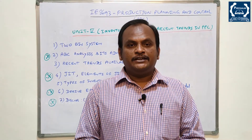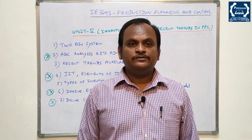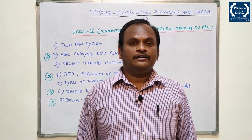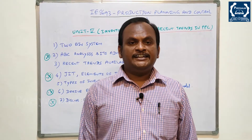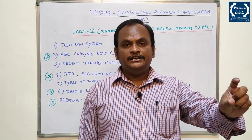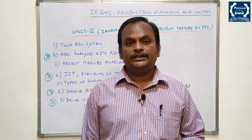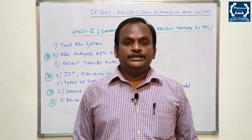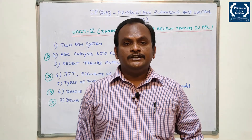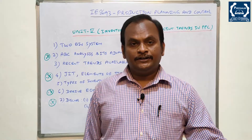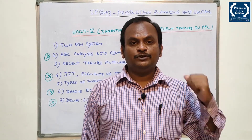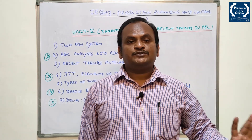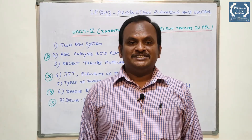PPC - production planning and control - 5 units of questions. This is a compulsory and scoring subject. You can see headings, subheadings, examples, and charts. It is an easy scoring paper. If you go to industry, this is compulsory knowledge. You can score 70 to 80 maximum. Easy paper - all the best!